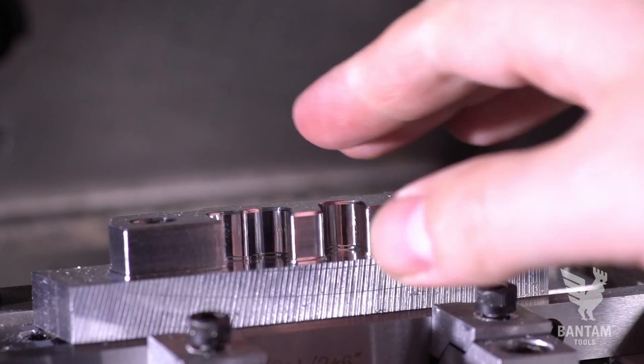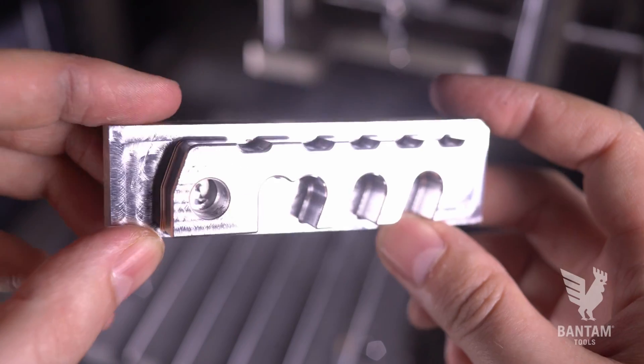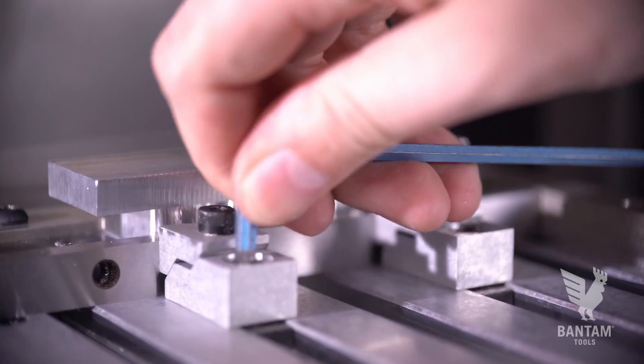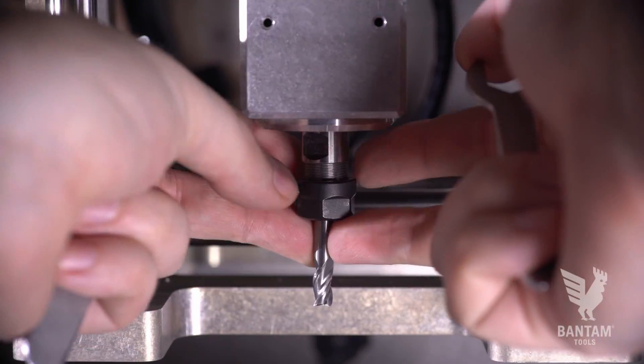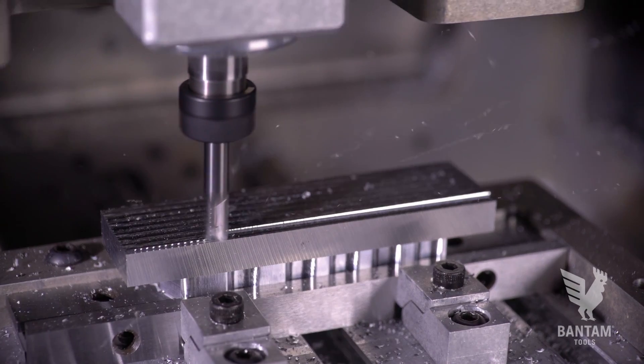Now comes the fun part. Remove the piece from the toe clamps, brush off any chips on the parallels, and insert the piece back in the machine with through hole oriented on the left side. We'll put our quarter inch end mill back in the machine, and we're ready for op 3.